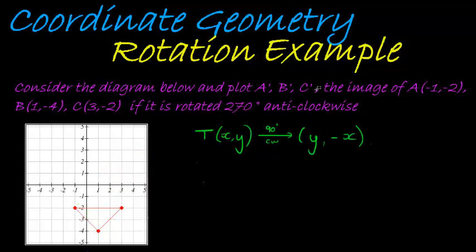So firstly just plot those points. We've got A is (-1, -2), so that's point A which is here. Then we have point B which is (1, -4), that makes this one B.